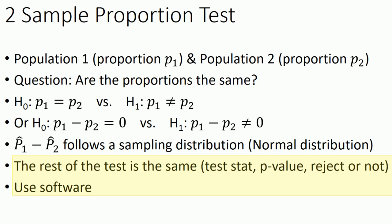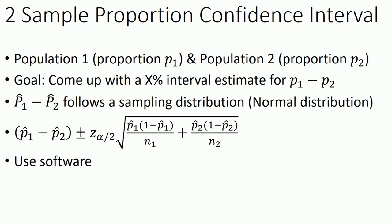In practice, you'll be using software to do this. You just have to be sure to put all the numbers in the right place. Then you can interpret the test statistic, which is going to be a z statistic and an associated p value. As always is the case, when you have a very small p value, that means you want to reject the null hypothesis. A very large p value tells you to not reject the null.